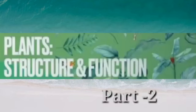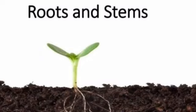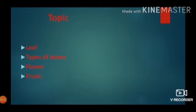In the previous video we studied the two main parts of a plant, that is roots and stem. In this video we are going to study the topics: leaf, types of leaves, flowers, and fruits.